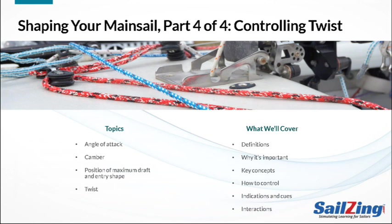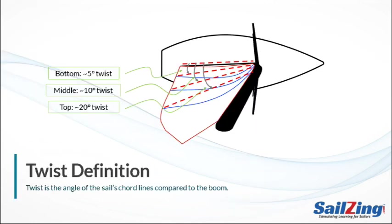Today's topic is controlling twist. When we say a sail is twisted, we mean that the angle at the top of the sail is not parallel to the boom, just like a strip of paper might be twisted by holding the ends at different angles. Twist is measured by comparing the chord lines at different heights of the sail to the angle of the boom. In the drawing, the sail has five degrees of twist in the bottom, ten degrees in the middle, and twenty degrees at the top.